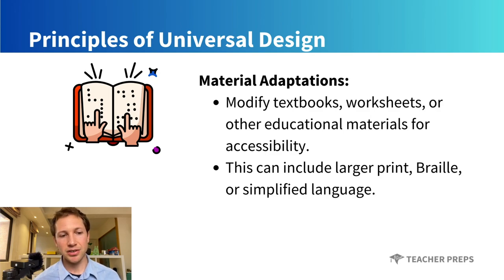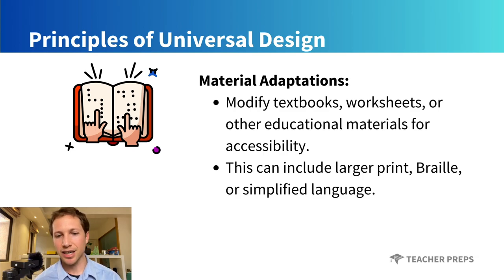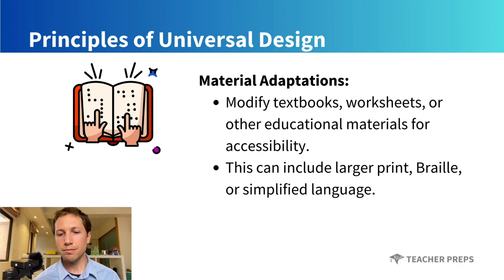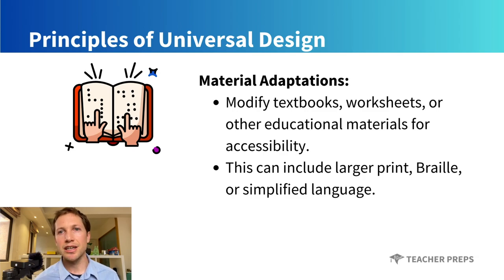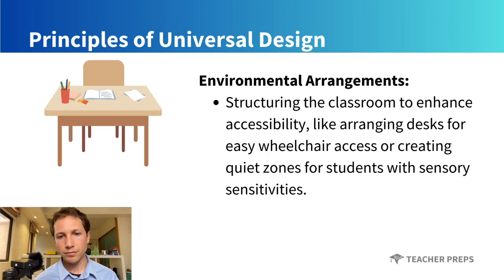Material adaptations happen when teachers modify the textbook, a worksheet, or other educational materials to provide accessibility for all students. This might be enlarging the print, providing Braille, or simplifying the language so that students still learn the same content and skills but can do so at their level.